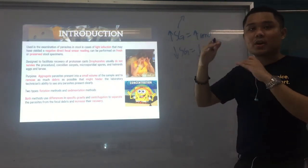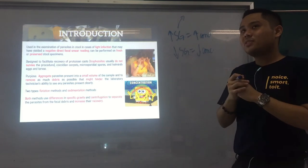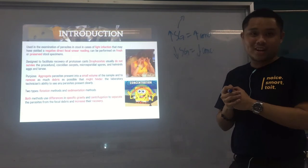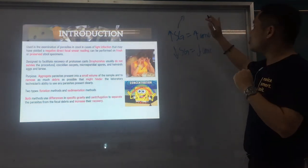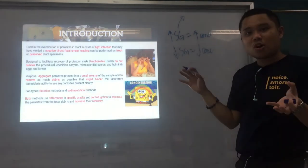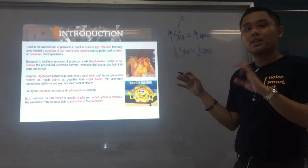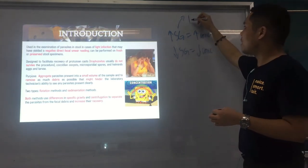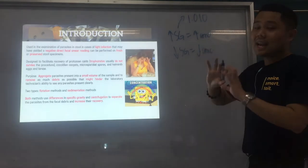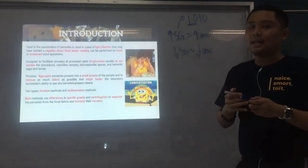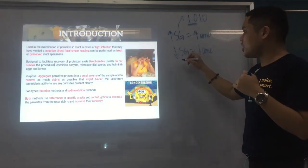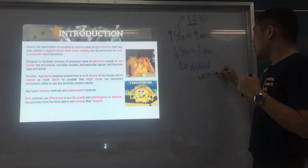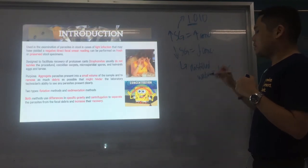SG doesn't have a unit because it's a ratio. Usually it starts with 1.010, and the SG of distilled water is 1.000. The concept of SG is very important when you go to urinalysis in third year — examining specific gravity in urine can indicate a lot of diseases or characteristics of urine that pertain to disease, because it talks about concentration.